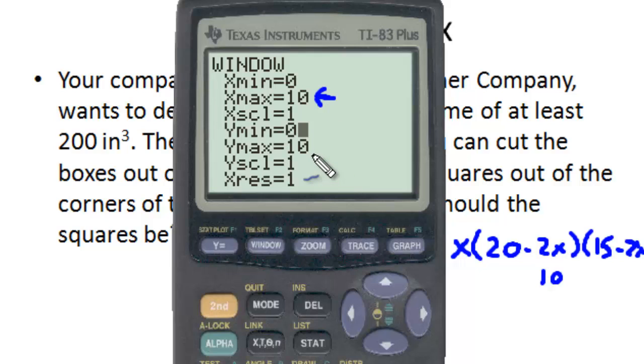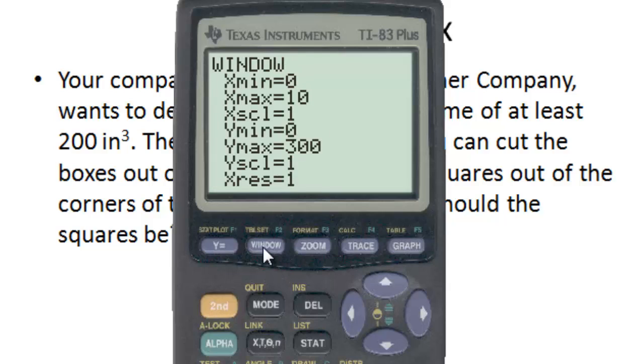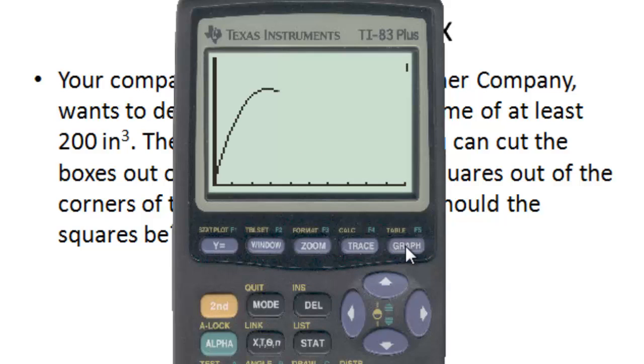Our y maximum, if we want to be at least 200 cubic inches for the volume. So our y, we need to go past 200. Let's go up to 300 and take a look and see what we get. We'll graph it. We don't quite include as much as we want in that, so we can go ahead and bring it back. Bump it up to 500. And there we have our nice arch there.